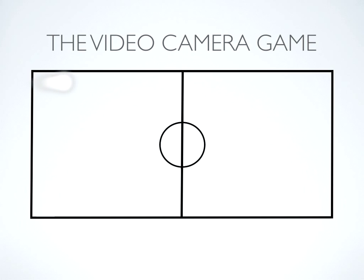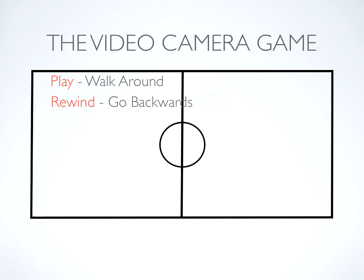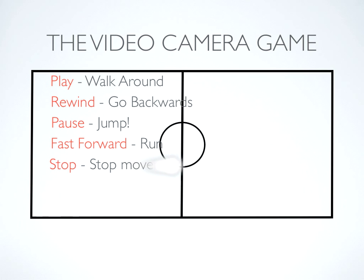So if you say play, or yell out play, they're going to walk around. If you say rewind, they'll start going backwards. If you say pause, they have to jump up on the spot. Fast forward, they can start running around.